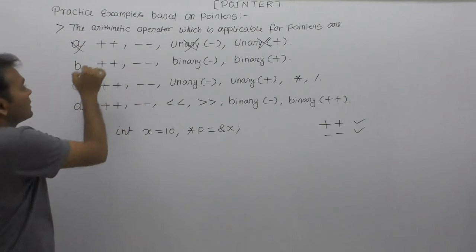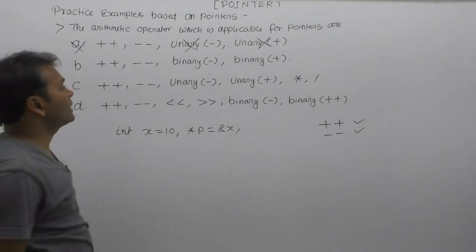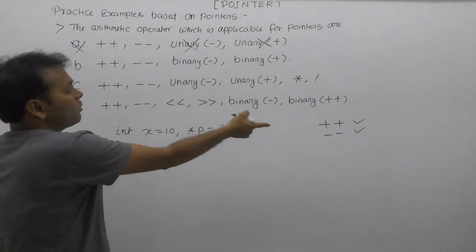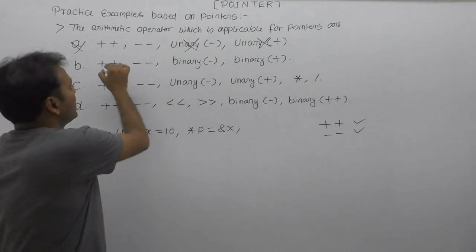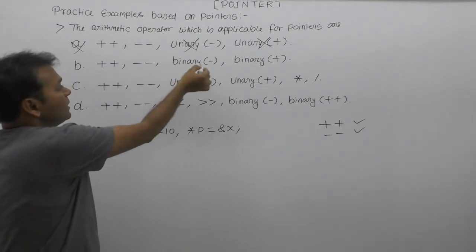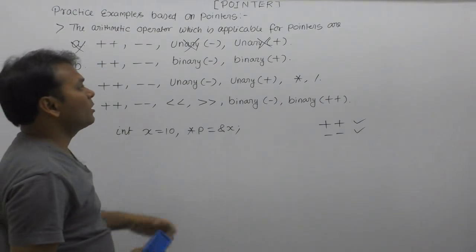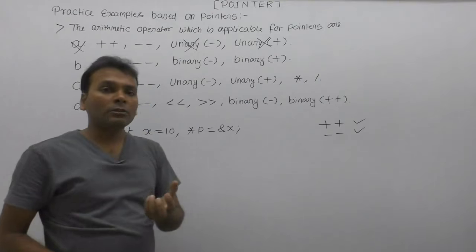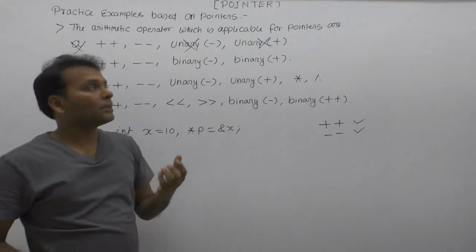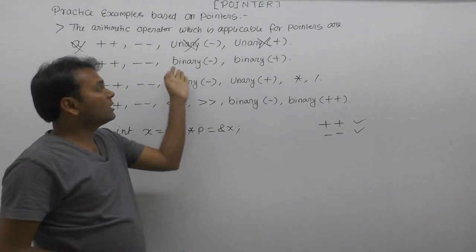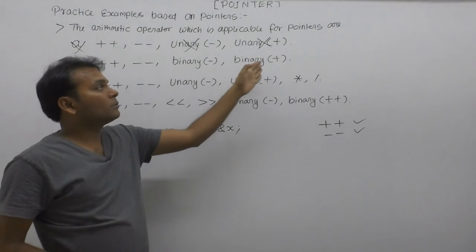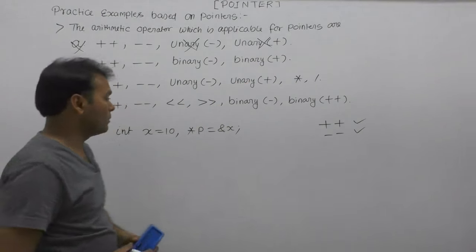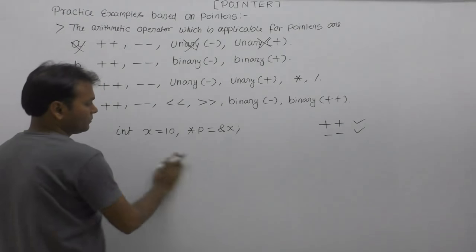Plus-plus and minus-minus are already tested as valid. Now let's check binary minus and binary plus. For binary minus or binary plus applied to pointers, let's check if these are possible.